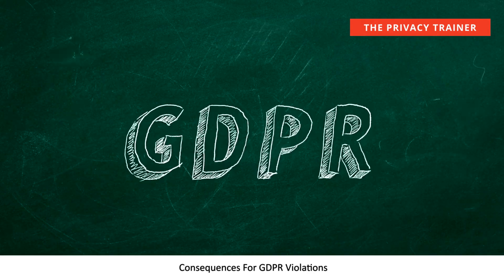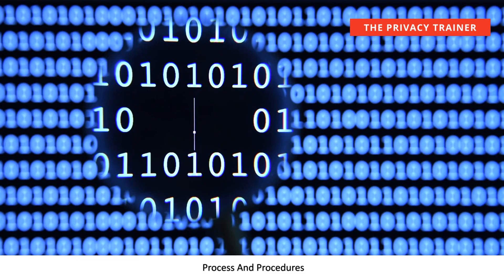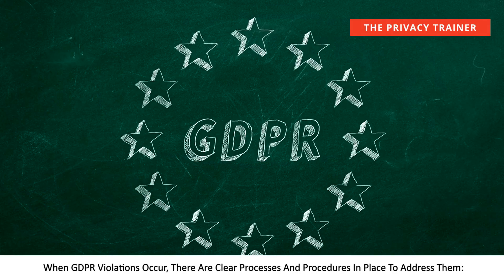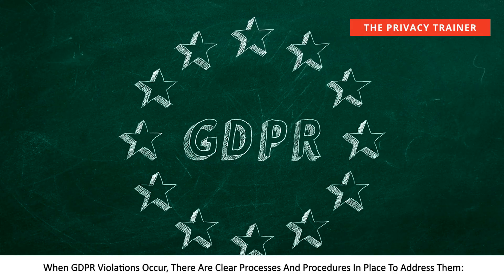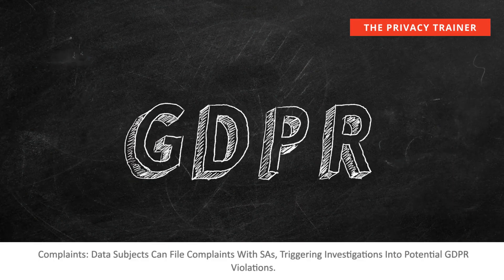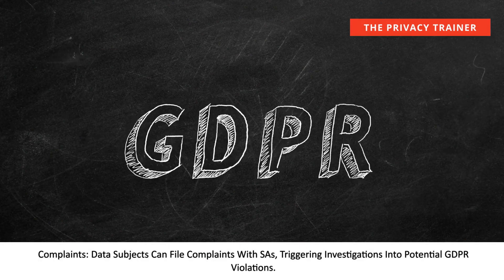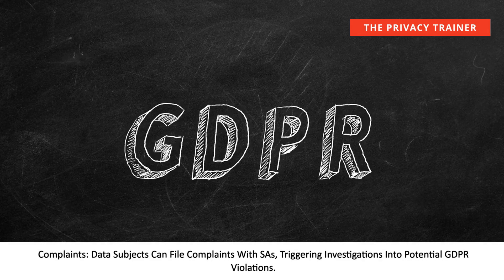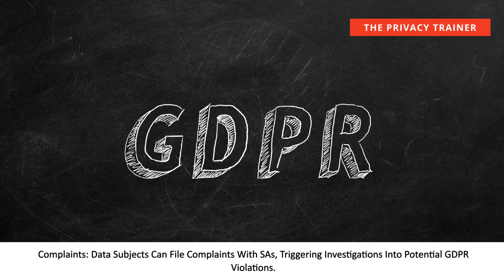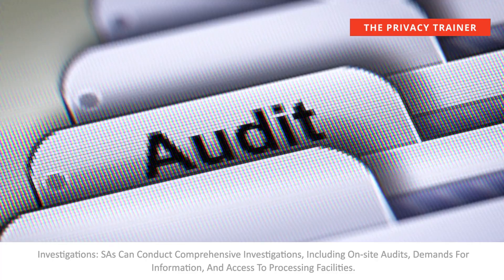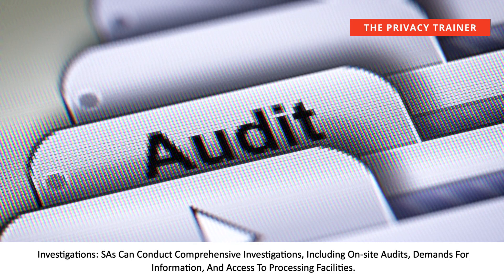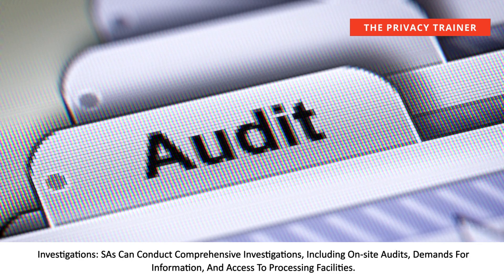Consequences for GDPR Violations. Process and Procedures. When GDPR violations occur, there are clear processes and procedures in place to address them. Complaints. Data subjects can file complaints with SAs, triggering investigations into potential GDPR violations. Investigations. SAs can conduct comprehensive investigations, including on-site audits, demands for information, and access to processing facilities.